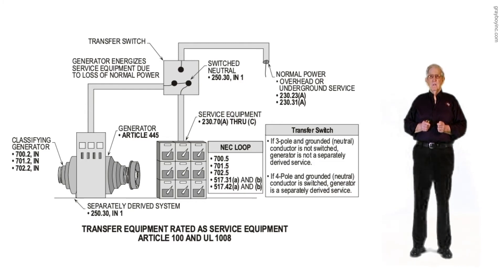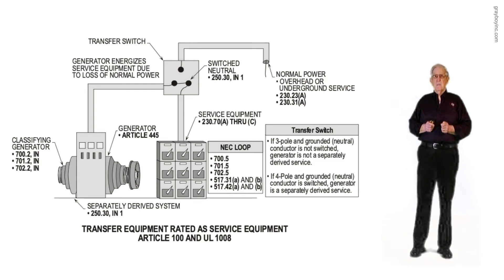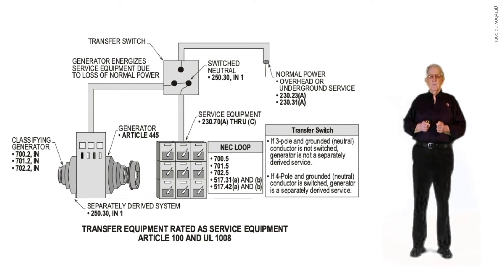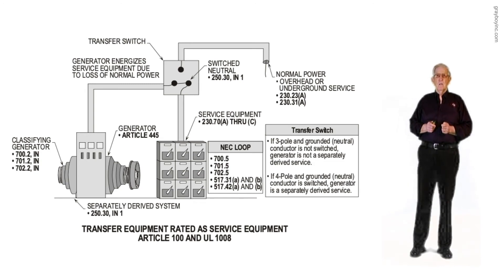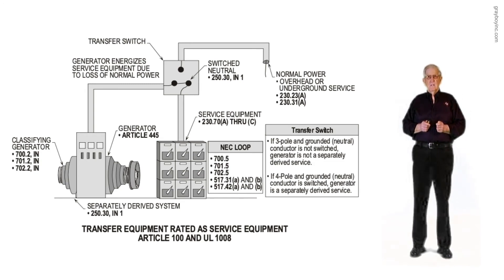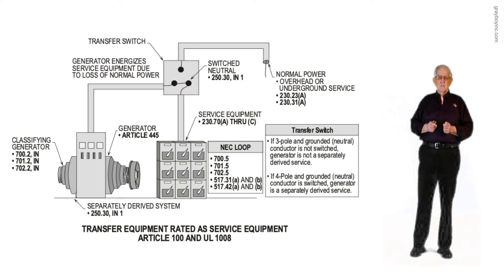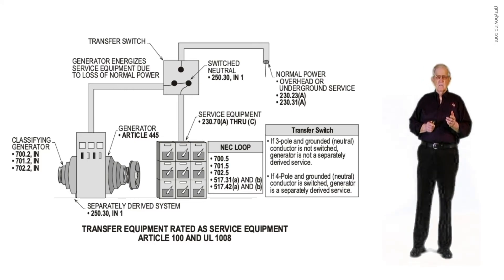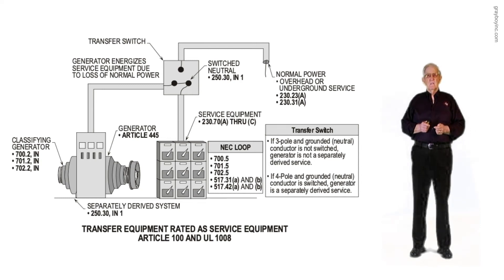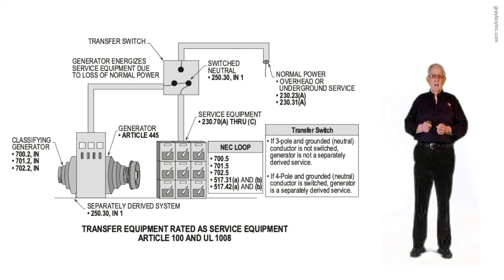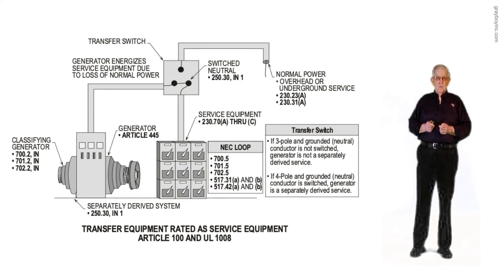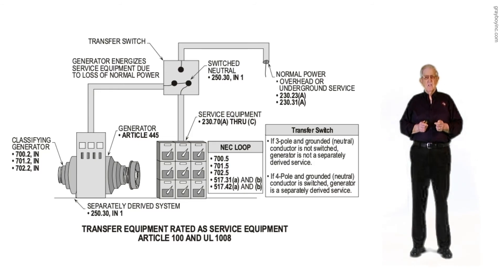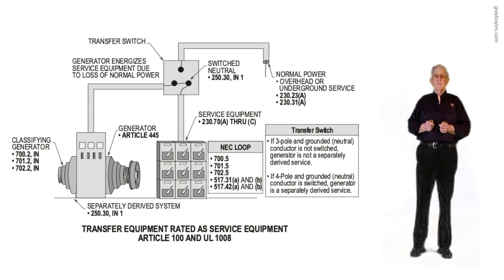For normal power — overhead or underground — for this type of service, you'd find the rules in 230.23A or 230.31A. The service equipment, disconnects, and how they would be arranged — one main or two to six mains — is covered in 230.70A through C, 230.71, and 230.72.